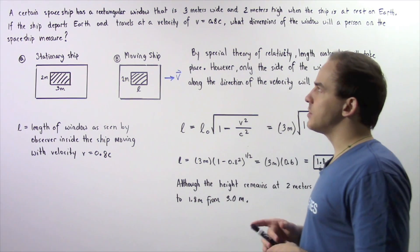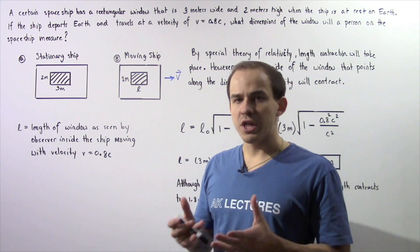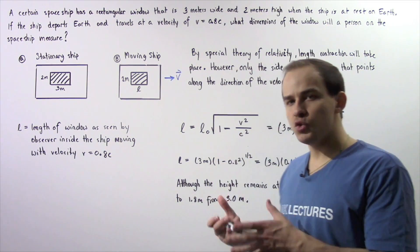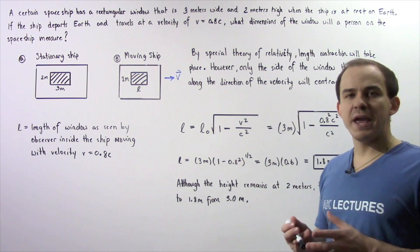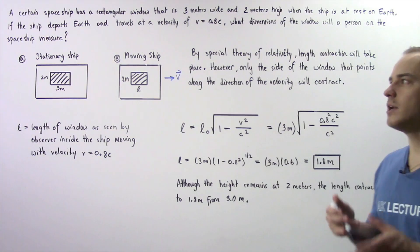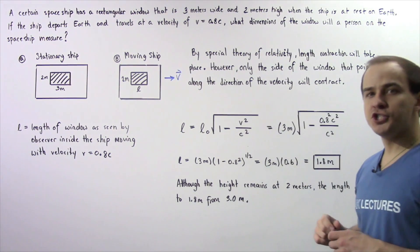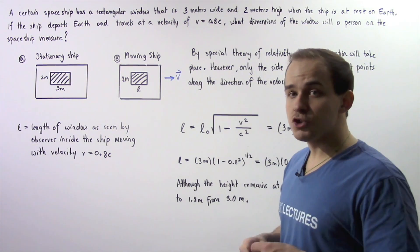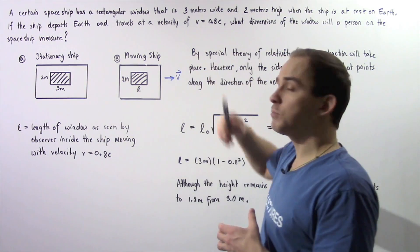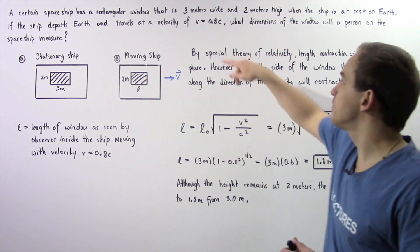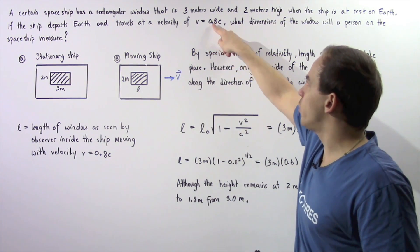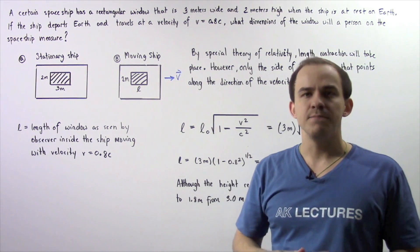A certain spaceship has a rectangular window that is 3 meters wide and 2 meters high when the spaceship is stationary on Earth. Now, if the ship departs Earth and travels with a velocity that is 80% that of the speed of light in a vacuum, so V is equal to 0.8 multiplied by C.